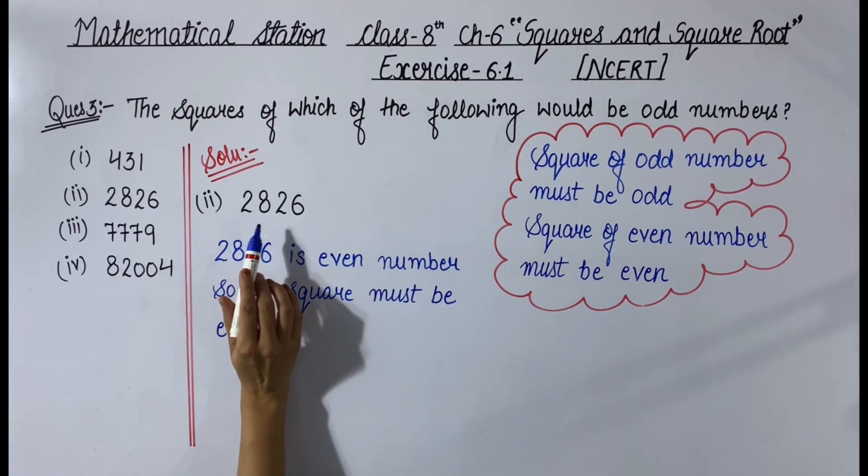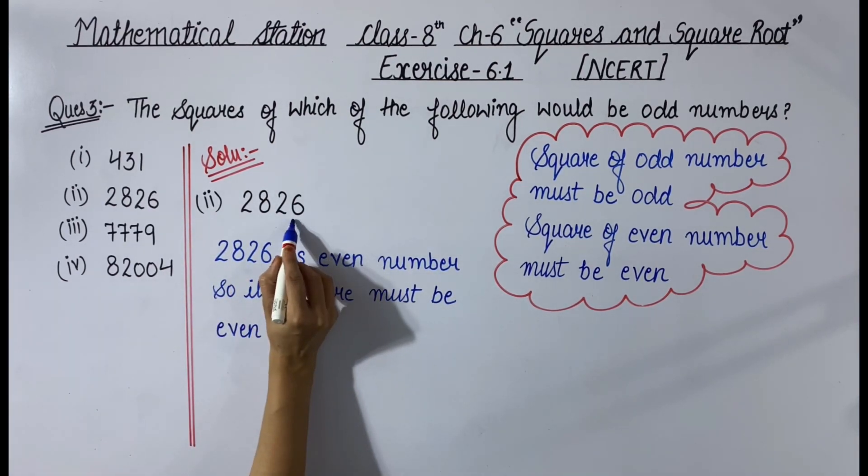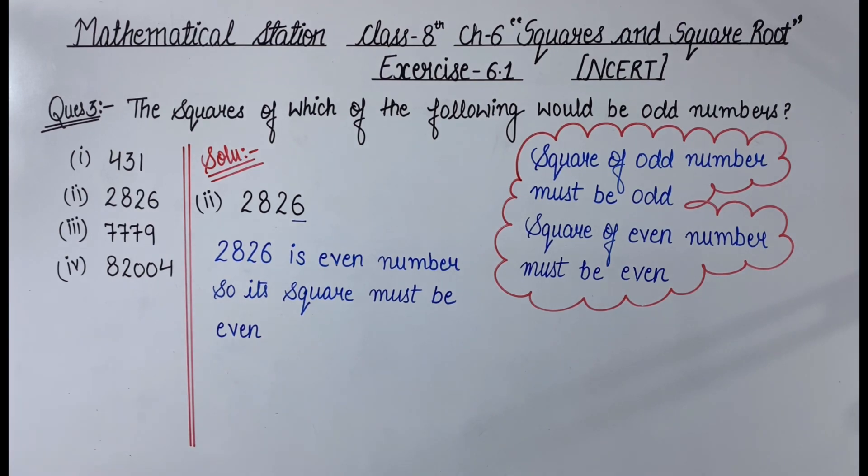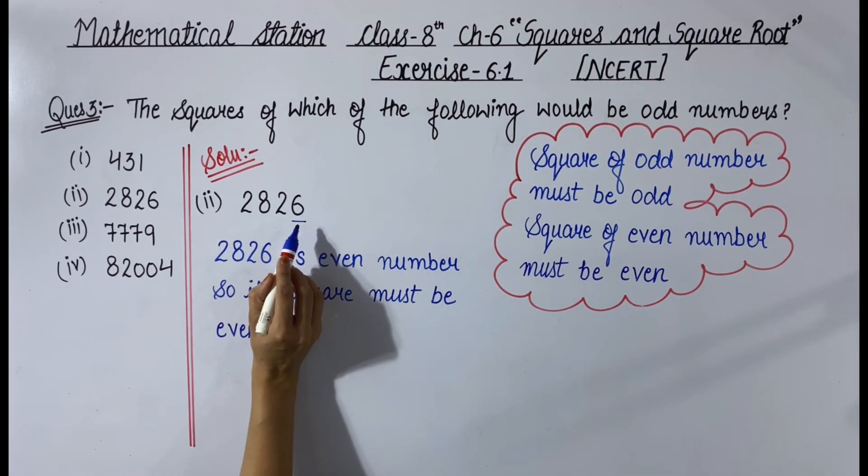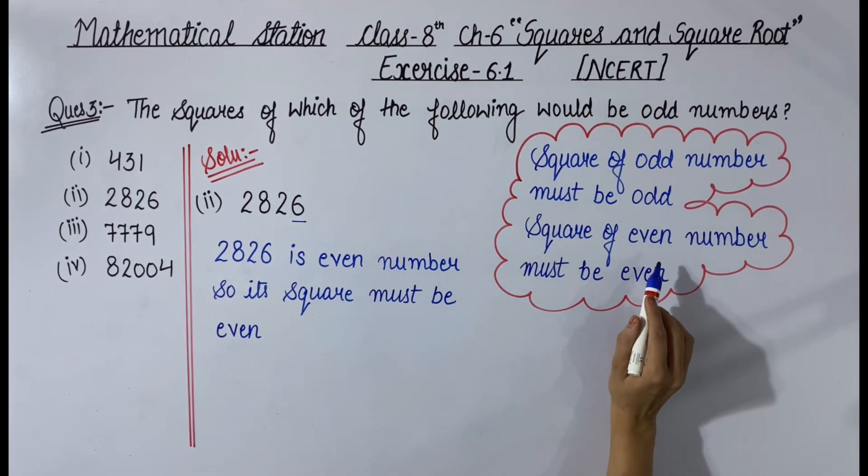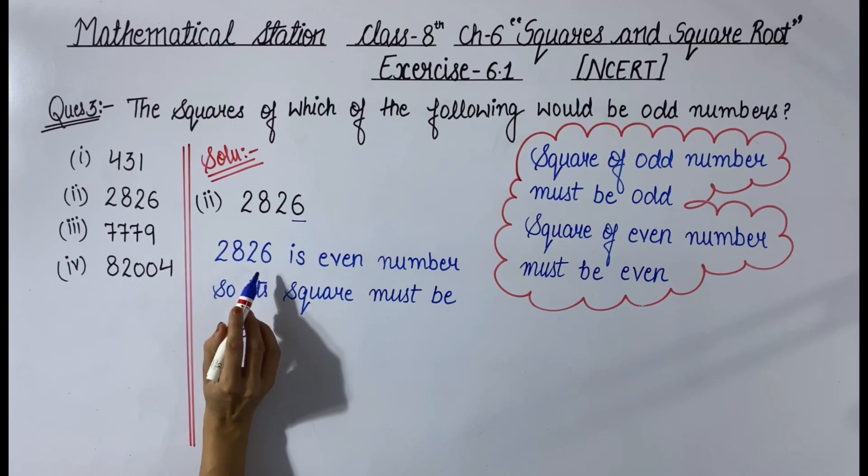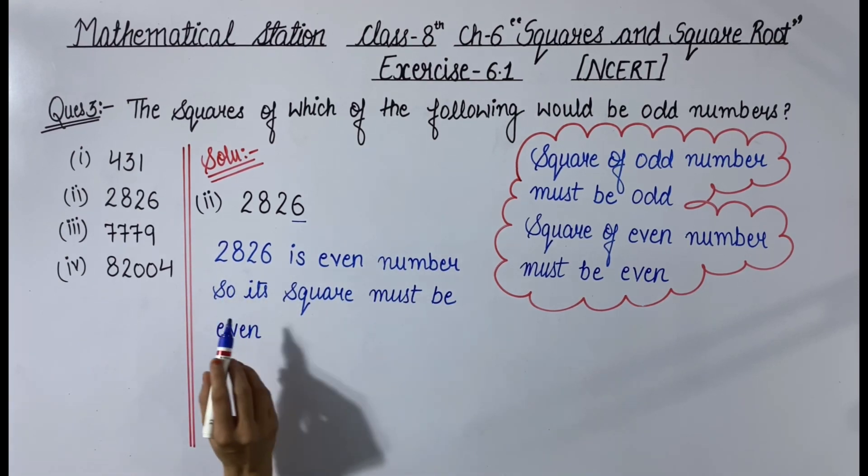Now second part is 2826. Here the last digit is 6, which is an even number, so 2826 is even. We know that an even number's square is even. So 2826 is even, therefore its square must be even. Clear?